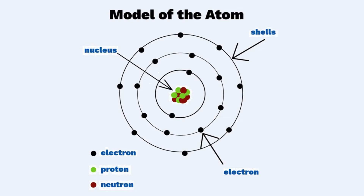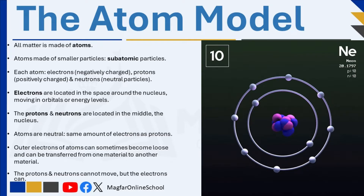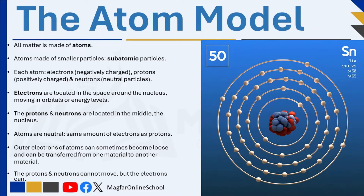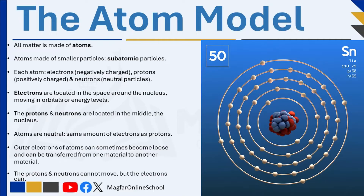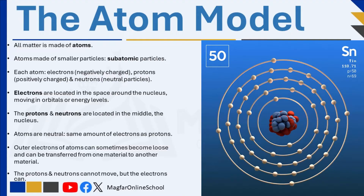These subatomic particles are called protons, neutrons, and electrons. Each atom consists of electrons, which are negatively charged particles; protons, which are positively charged particles; and neutrons, which are neutral particles. The electrons are located on the outside of the atom, loosely bound, moving in orbitals or energy levels around the nucleus. The protons and neutrons are located in the nucleus, at the center of the atom, and cannot be removed.